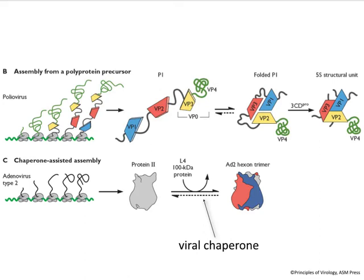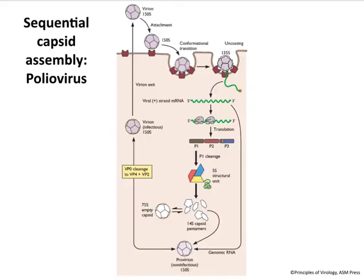A third way involves a chaperone. For adenovirus protein 2, which forms a hexon trimer, the proteins can't assemble on their own — they need a viral chaperone called the L4 protein. Chaperones are proteins that help other proteins assemble or become what they need to be; some are cellular, and many viruses encode their own chaperones. Here three copies of protein 2 don't fold correctly unless the chaperone helps them. So that's three ways to make subassemblies: from individual proteins, from a polyprotein precursor, and with chaperone assistance.